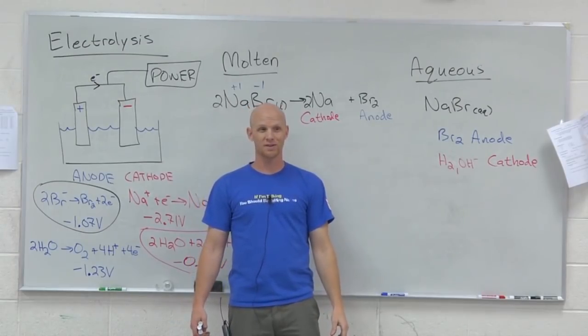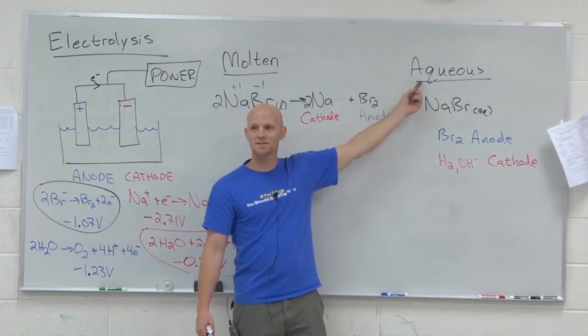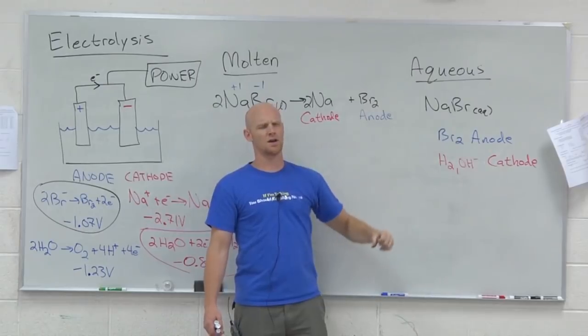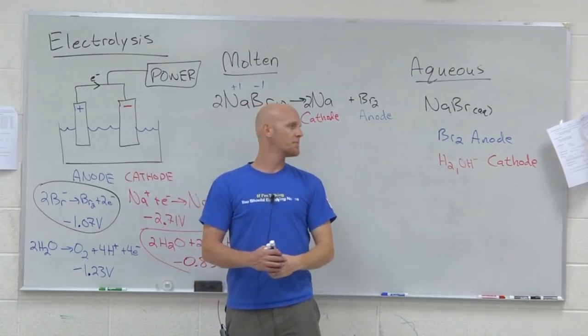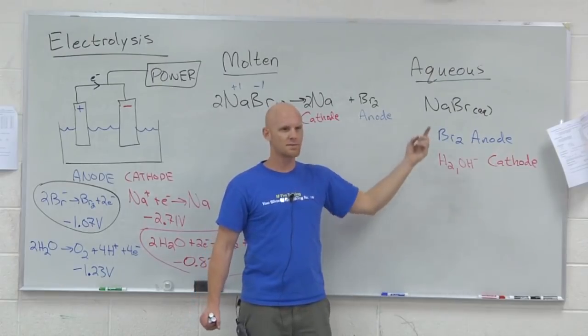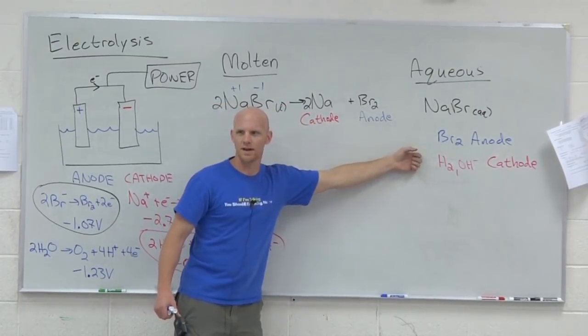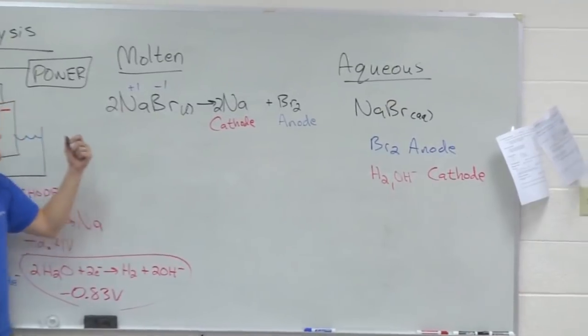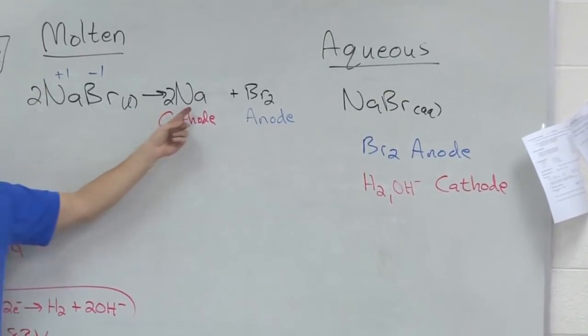But if my goal was to make sodium metal, could we do aqueous? No. I could have said, hey, I'm the new guy in the company, but you know what? Let's save some money. Let's do aqueous. And they'd fire me, because I'm a moron. You can't get sodium metal in aqueous electrolysis in this case. You'd have to do it molten to be able to get the sodium.